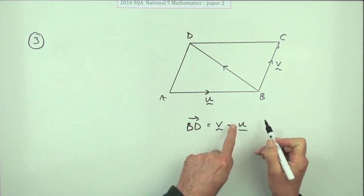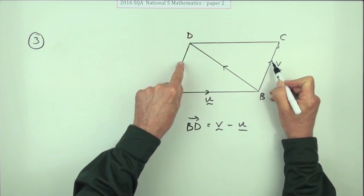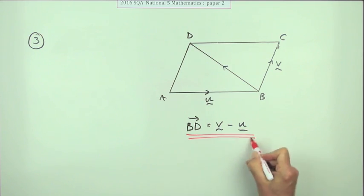Or you could do it the other way around, doing minus u first—go against u but then go with v. And that's about it.